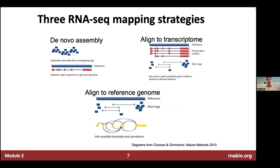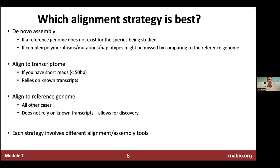There are at least three high-level RNA-seq mapping strategies: de novo assembly, alignment to a transcriptome, and alignment to a reference genome. For de novo assembly, you do this if you don't have a reference genome — you're basically trying to infer transcript structure for the first time from your data, which is essentially an assembly problem.